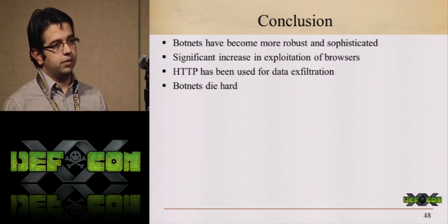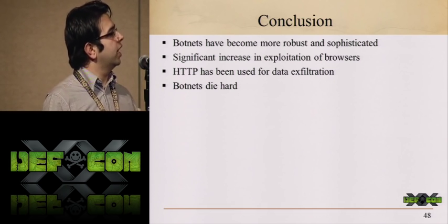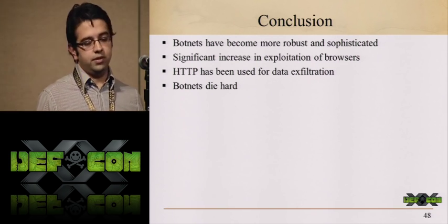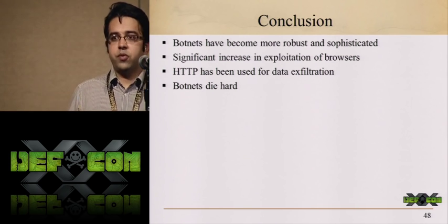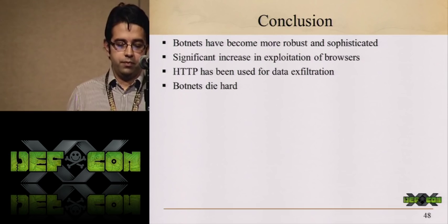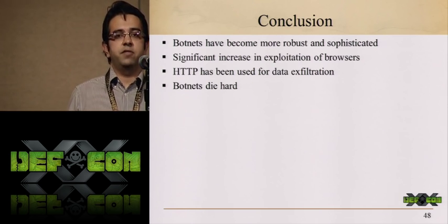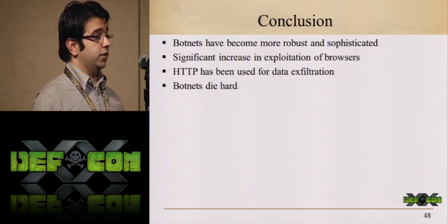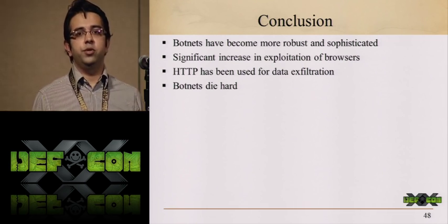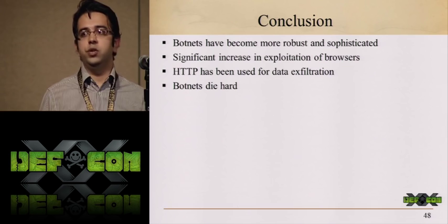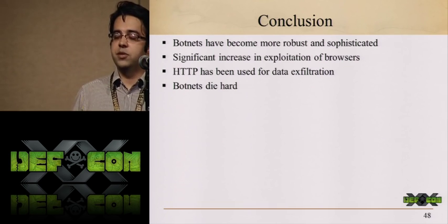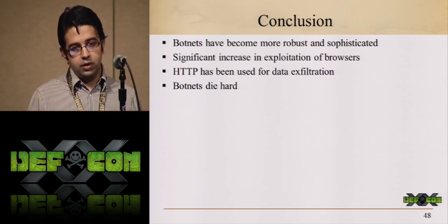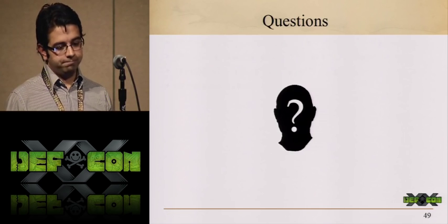In conclusion: looking at these scenarios and techniques, botnets have become more robust and sophisticated. There is a significant increase in the exploitation of browsers — browsers provide a window to the internet and it's always good to exploit them. HTTP has become the preferable protocol for data exfiltration. Botnets die hard — they are still existing and will continue to exist. We need to come up with new protection mechanisms using the concept of asymmetry to stop these botnets.